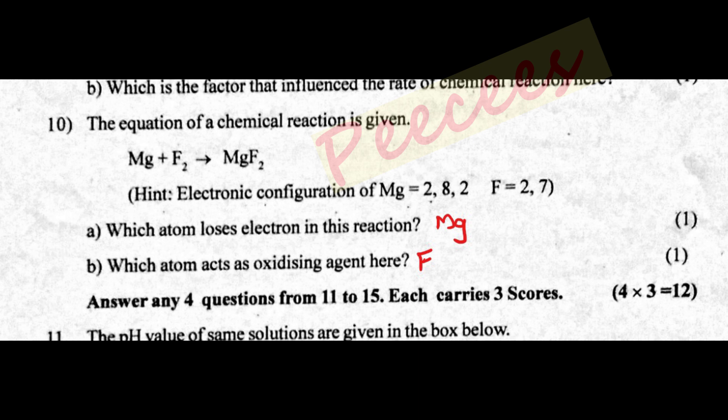The equation of a chemical reaction is given: Mg + F2 gives MgF2. The electronic configuration of magnesium is 2, 8, 2. Fluorine is 2, 7. Which atom loses electrons in this reaction?